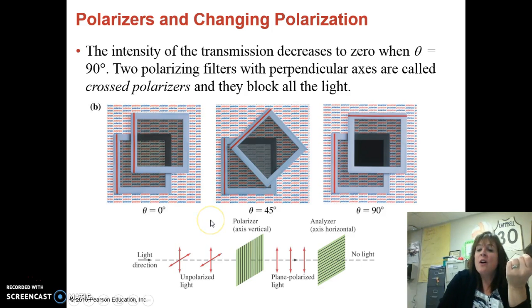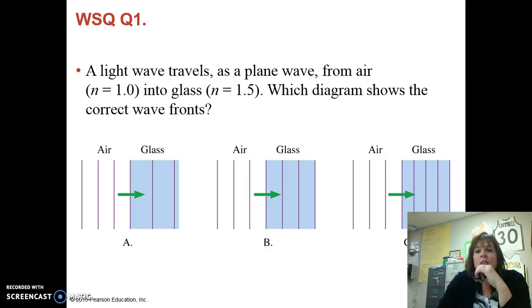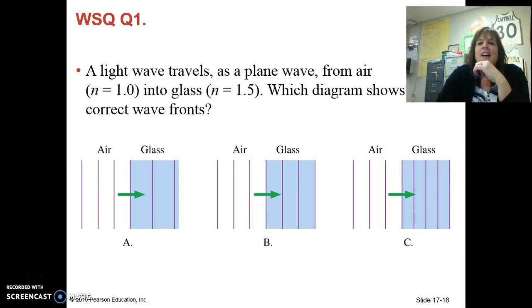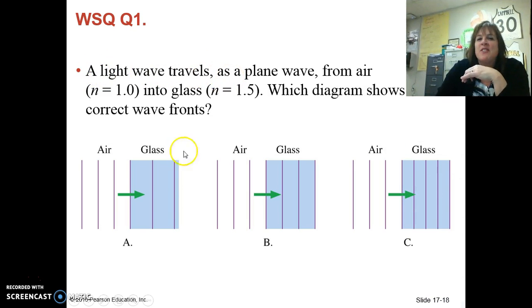All right. Now in your WSQ, you've got a couple questions to answer. The first one is this. The first question is, a light wave travels as a plane wave from air with a refractive index of one into glass with a refractive index of 1.5. Which diagram shows the correct waves inside the glass? A, B, or C? Mark it on your WSQ. Let me see if you get it right.